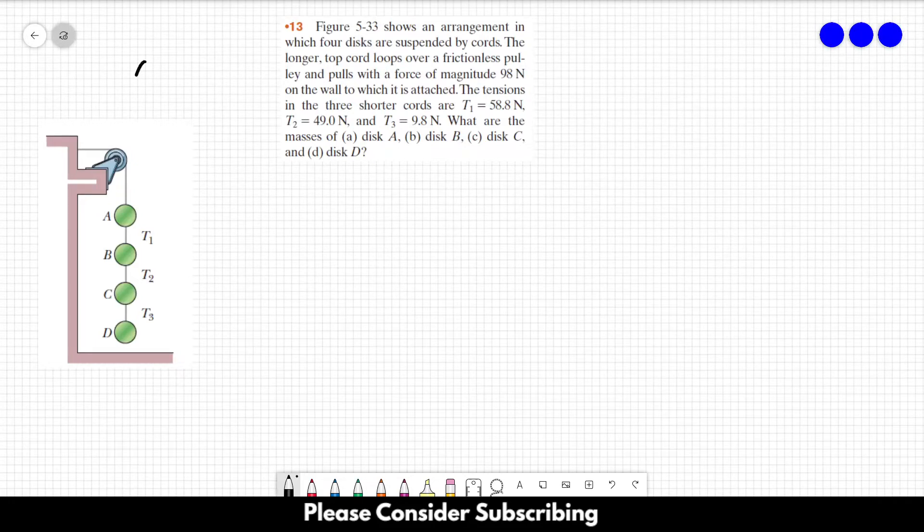Number 13. This figure shows an arrangement in which four discs are suspended by cords. The longer top cord loops over a frictionless pulley and pulls with a force of magnitude 98 N on the wall to which it is attached. The tensions in the three shorter cords are T1 equals 58.8 N, T2 equals 49 N, and T3 equals 9.8 N. What are the masses of disc A, disc B, disc C, and disc D?